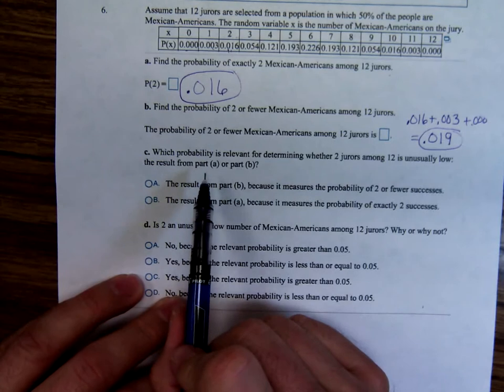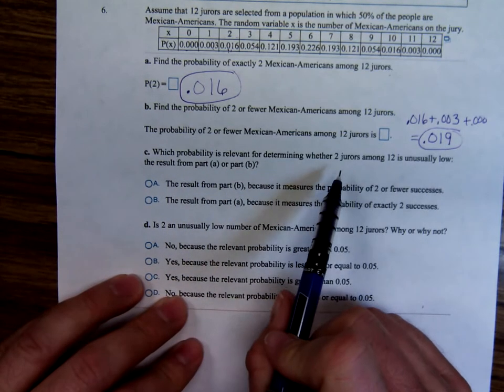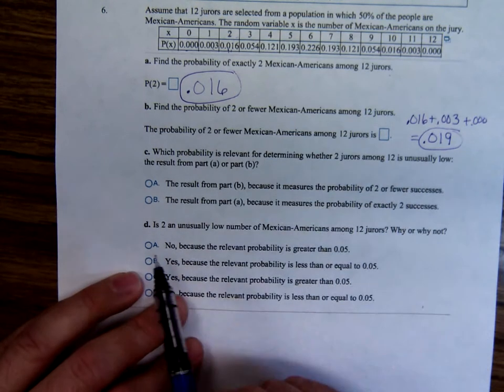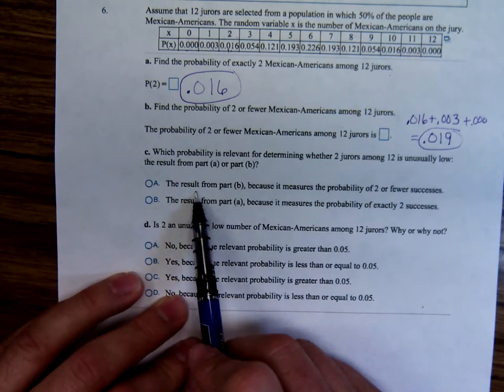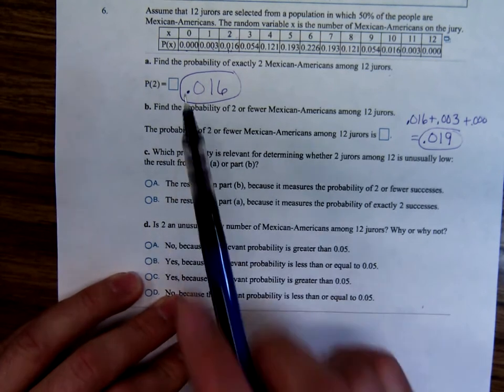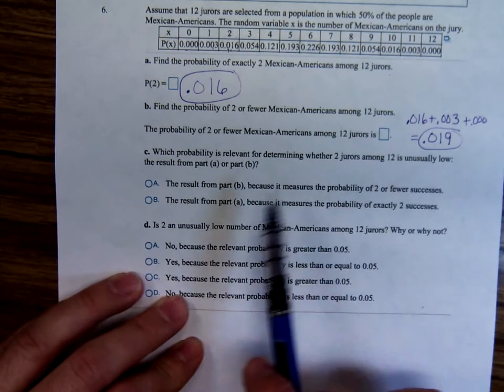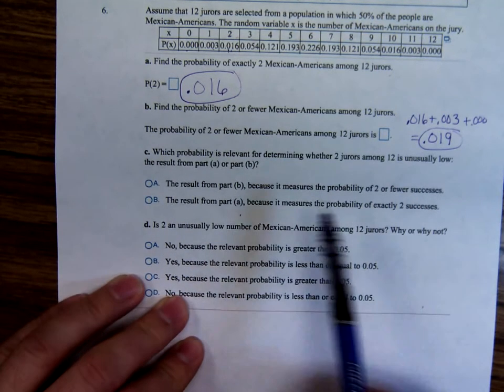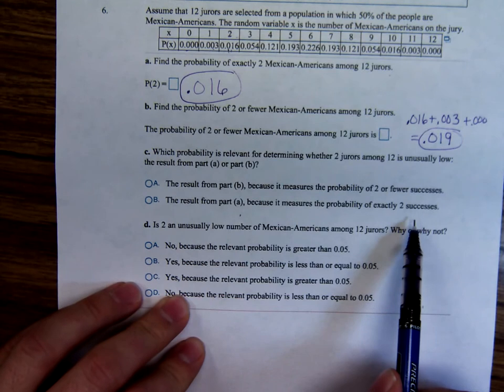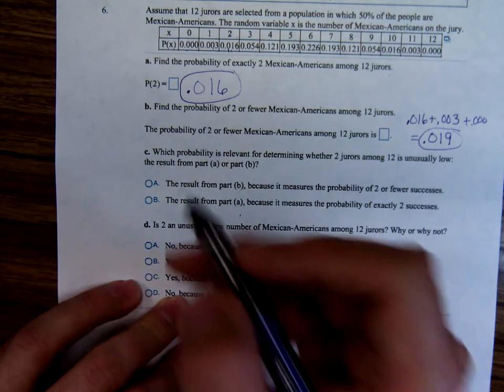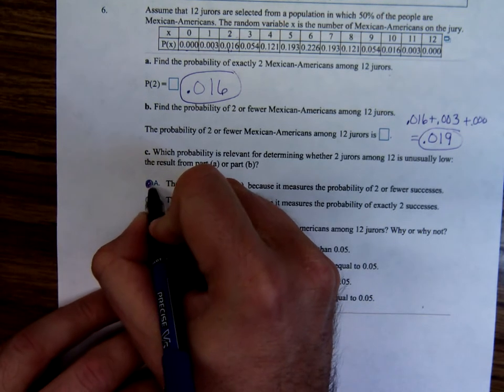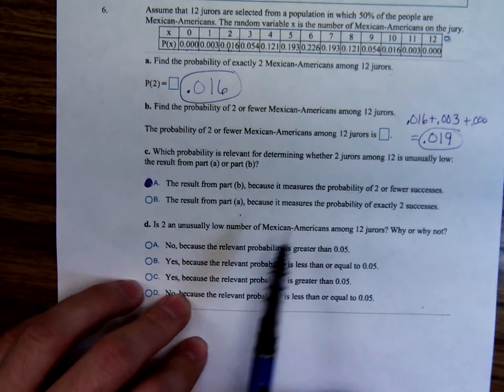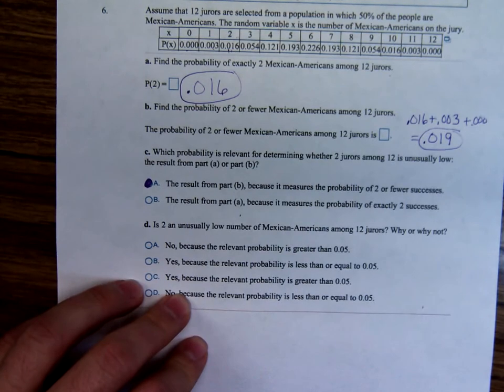Which probability is relevant for determining whether two jurors among 12 is unusually low? Would it be the part, the answer from part, wait, no, part B it asks first. Because it's two or fewer? Or the answer from part A, because it's exactly two? Well, it would be part A, because two or fewer would be used to determine if two jurors was unusual.